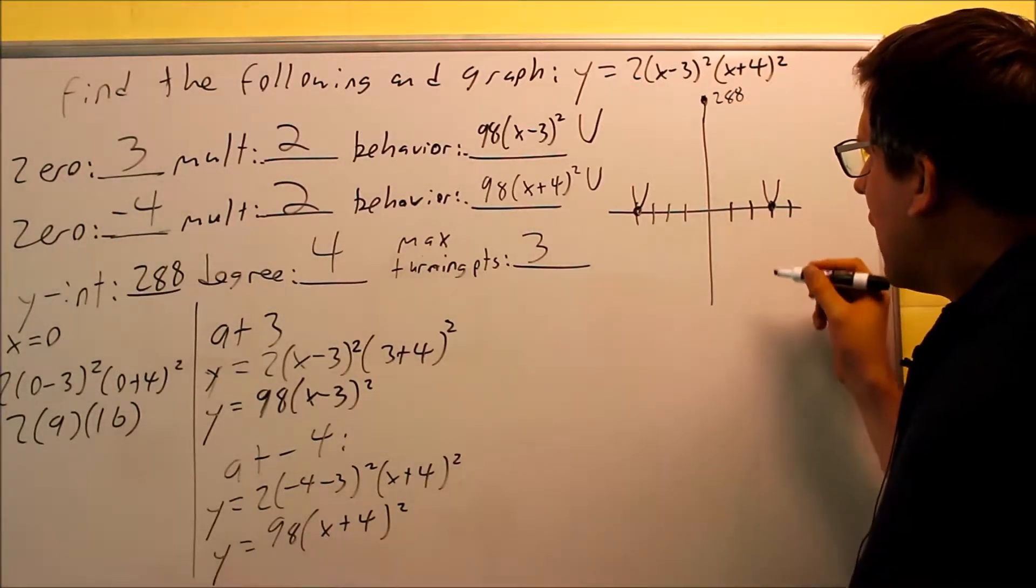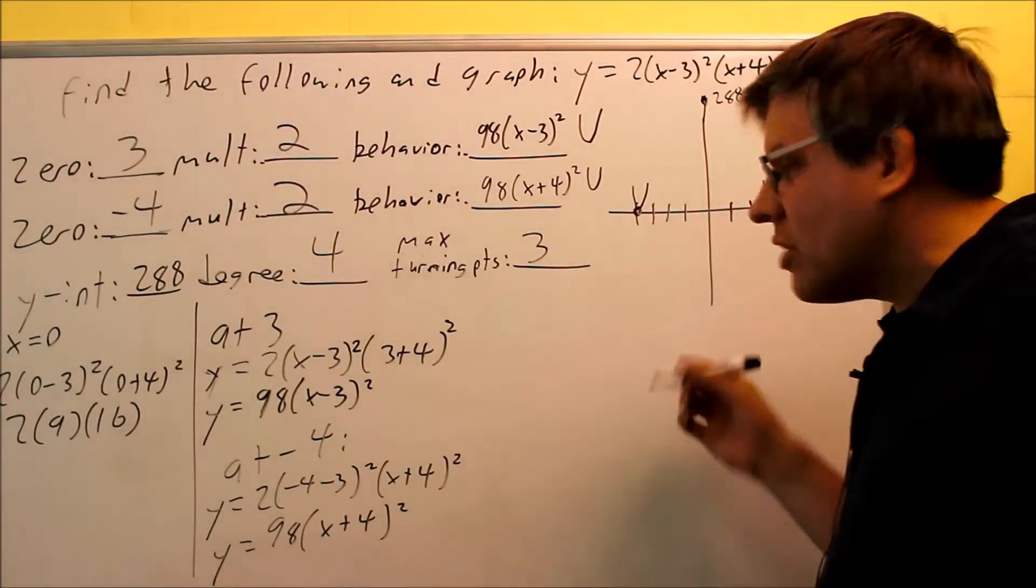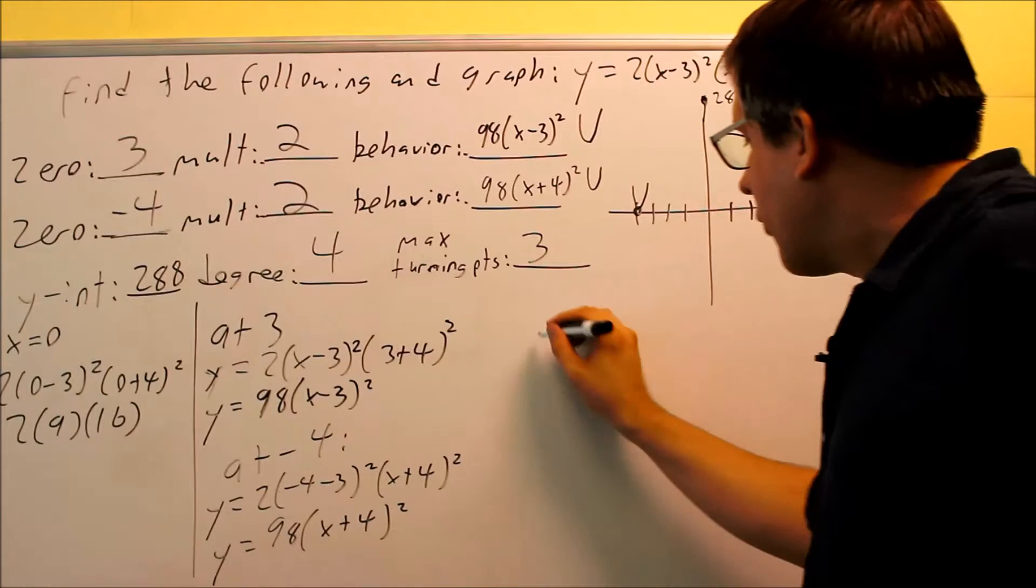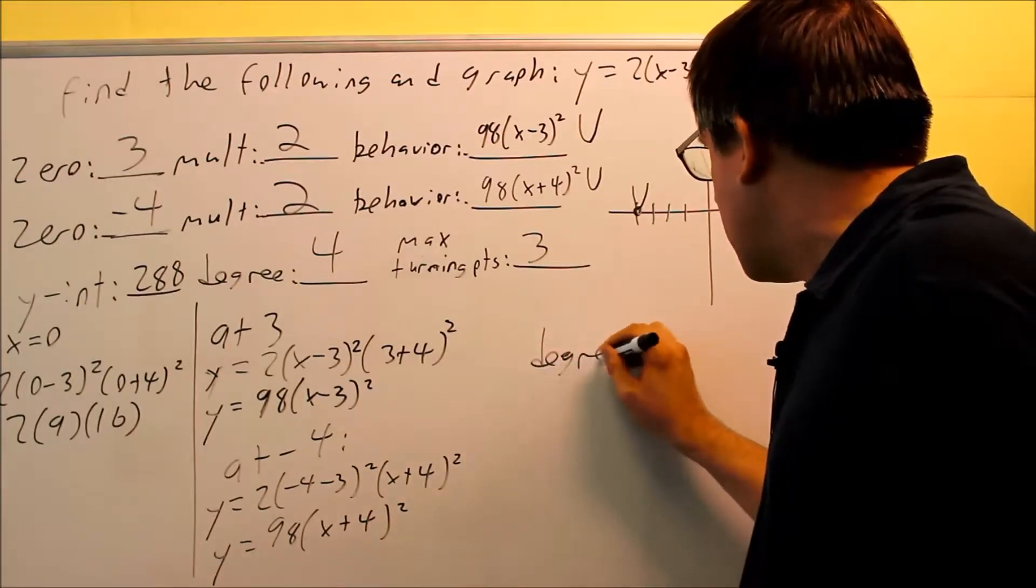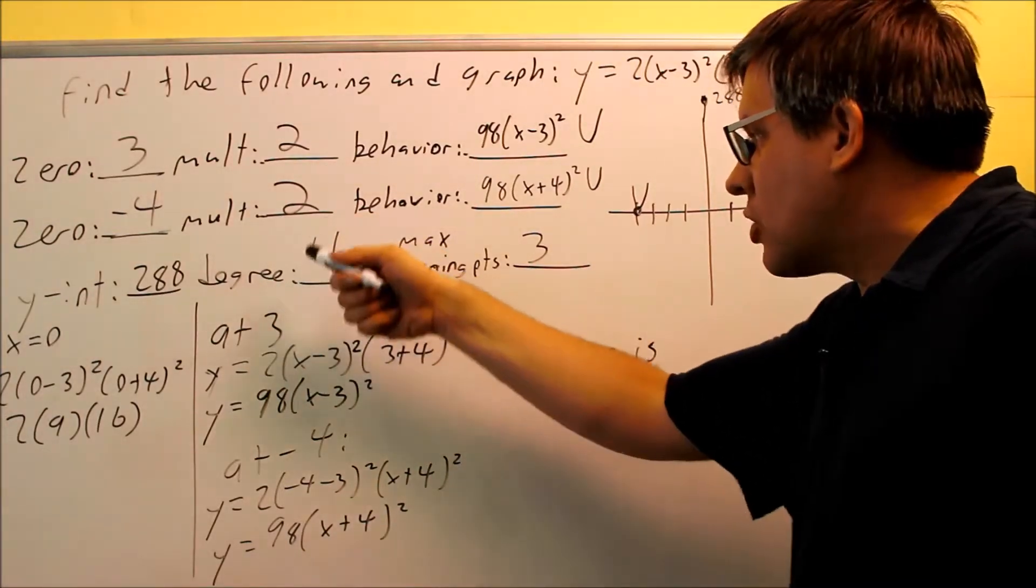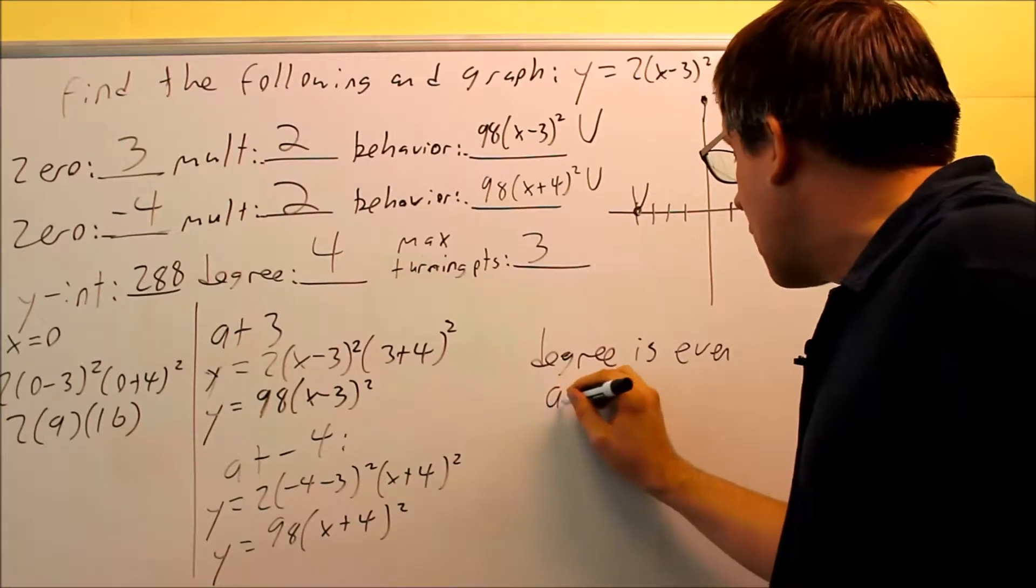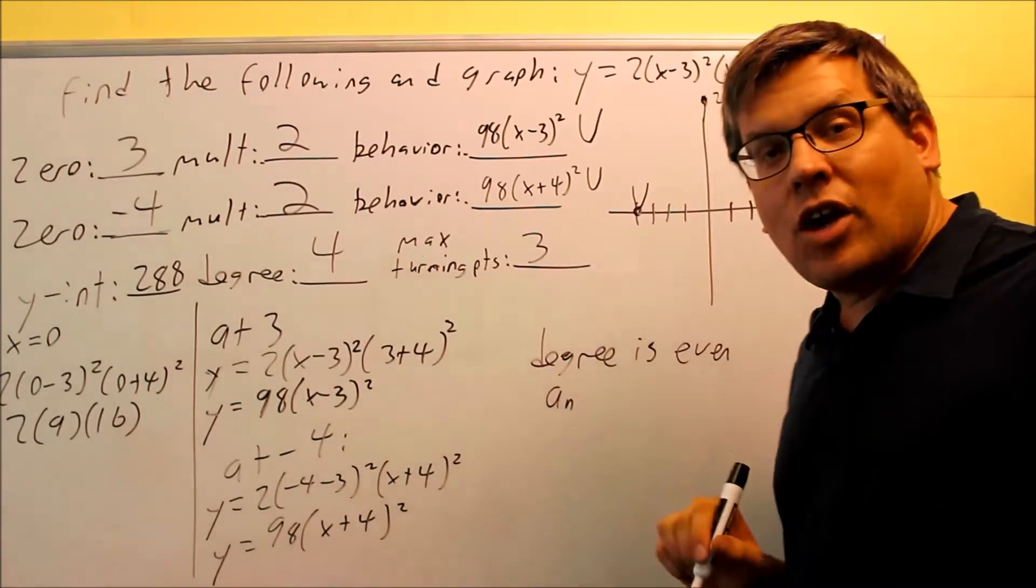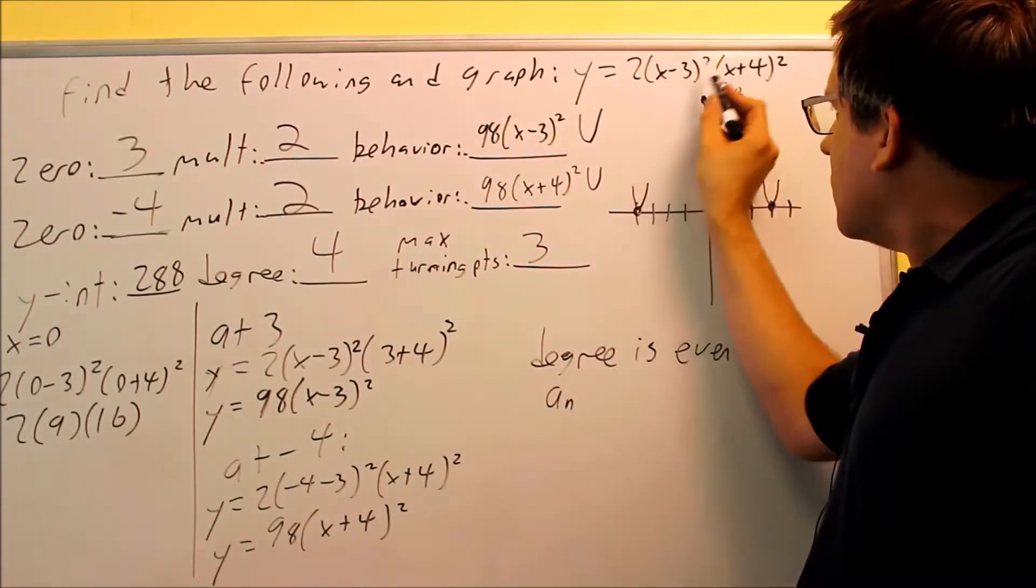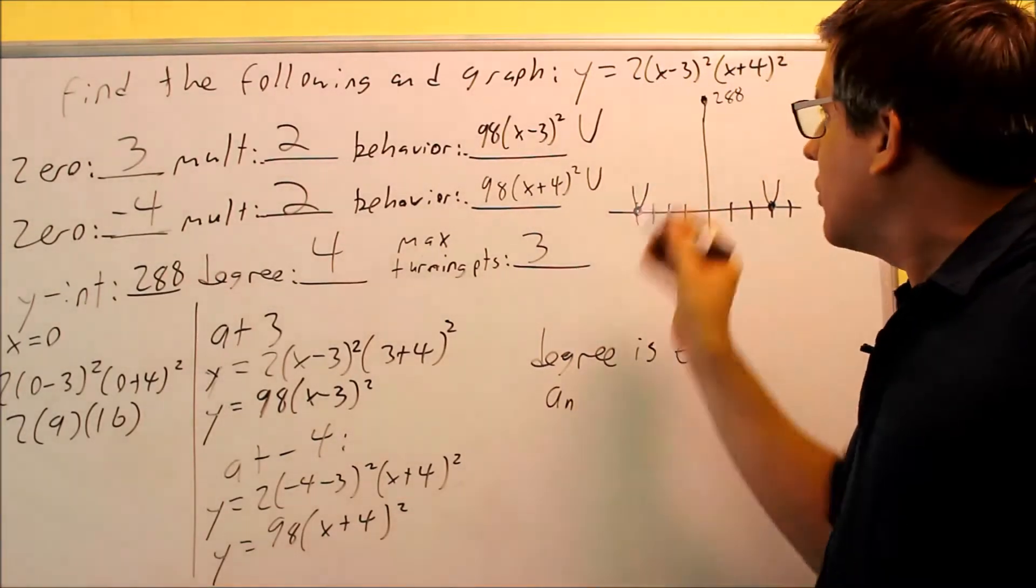So now all I have to do is I have to figure out what the end behavior is going to be on this one. So if I do end behavior, first of all, on this particular problem, my degree is, it's an even one this time because my degree is 4. So degree is going to be even, and I also want to find out my a_n. Now if I were to multiply this part out, I have a 1 inside there. I would get a 1 in front of the x. There's a 2 there. There's a 1 in front of this x as well.